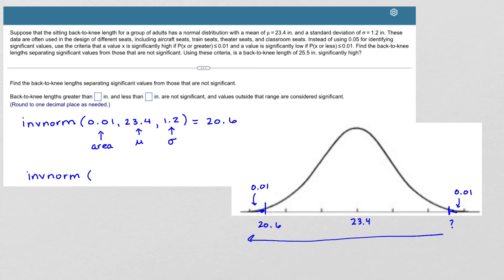But now I need to put the percentage that is to the left. So I did that for the first one. There was 1% to the left. But now I need to figure out what percentage is to the left if 1% is to the right, and that would be 99%.